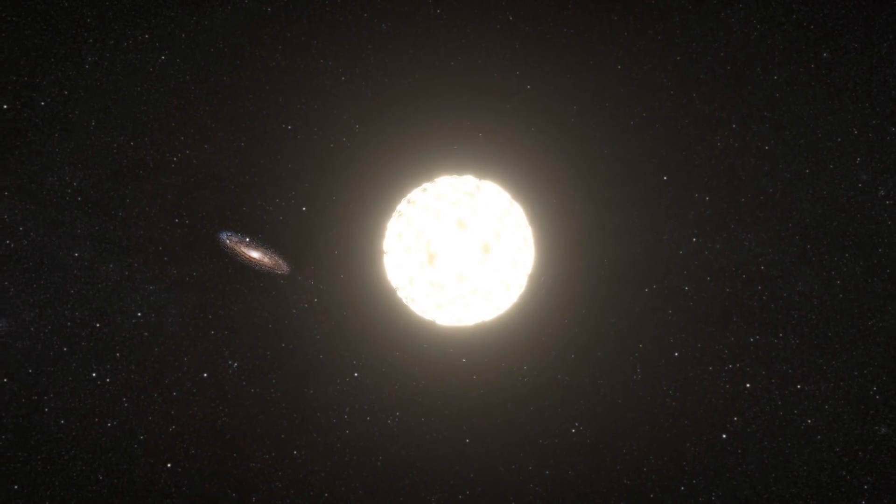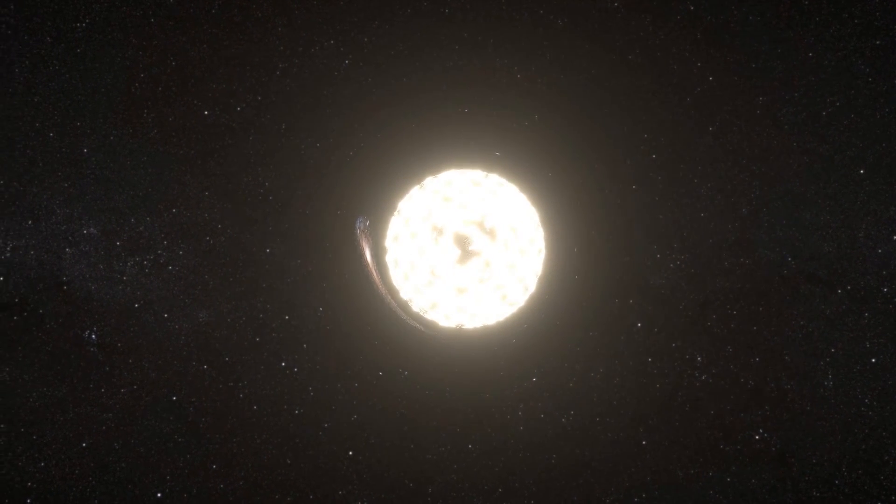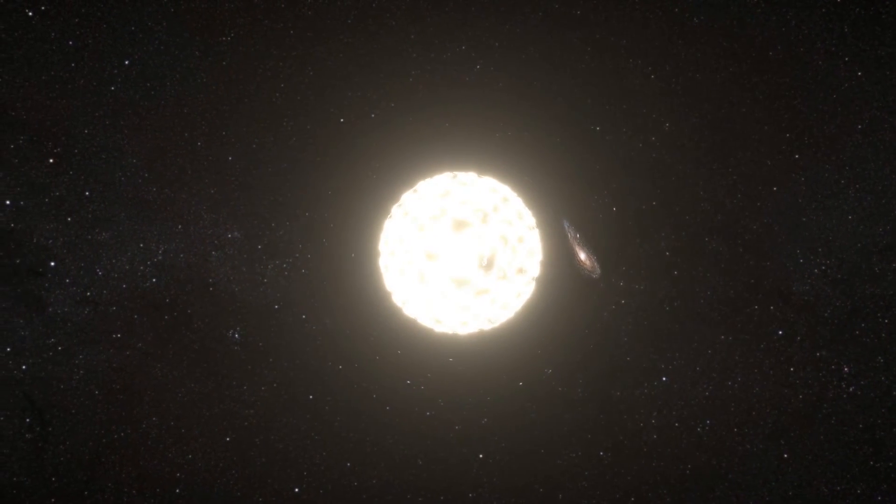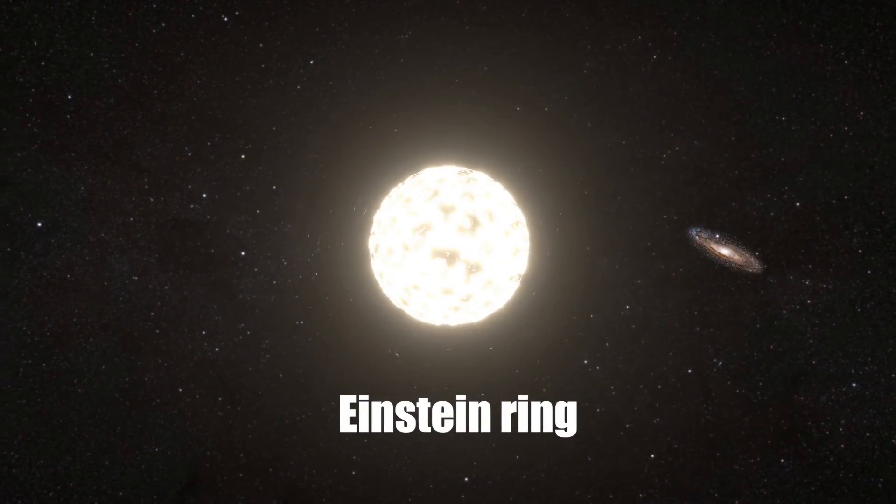In order to figure out this hypothetical, we first need to understand black holes, starting with gravitational lensing. This is a phenomenon caused by very massive objects in space to curve the light of other objects from behind them, creating what is called an Einstein ring.